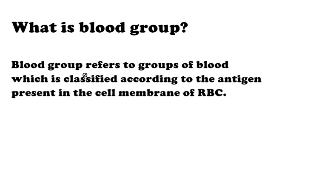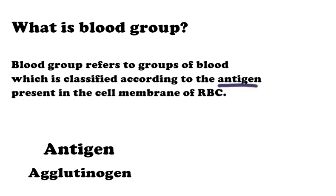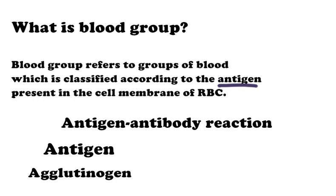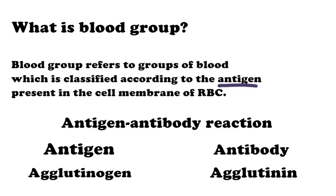These antigens mark red blood cells with different identities. They are also called agglutinogens, as they may cause agglutination through antigen-antibody reaction. The corresponding antibody is gamma globulin, also called agglutinin, present in plasma and may be IgM and IgG.